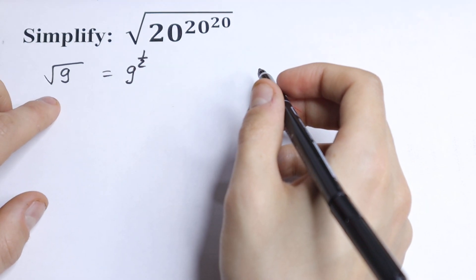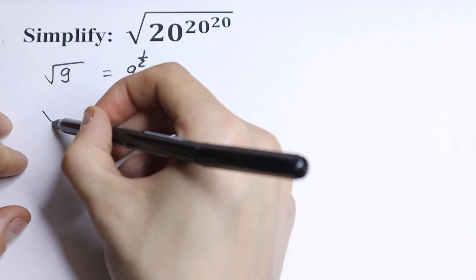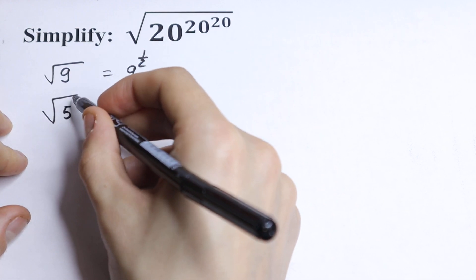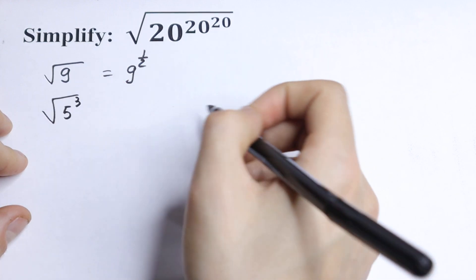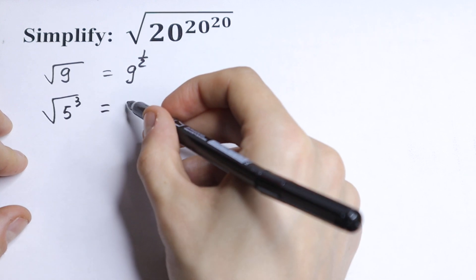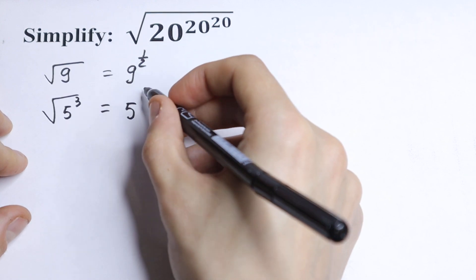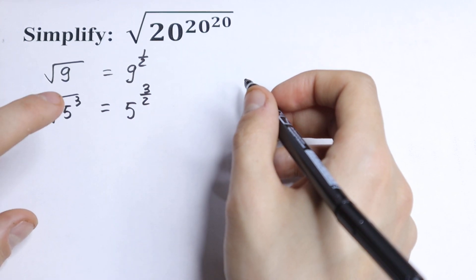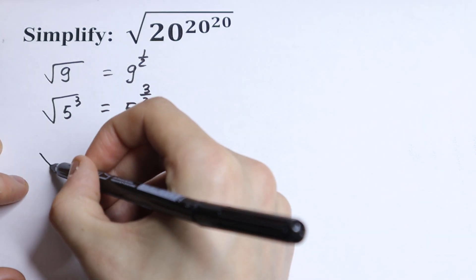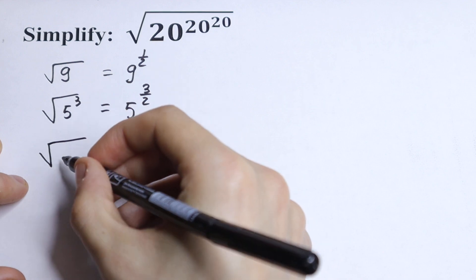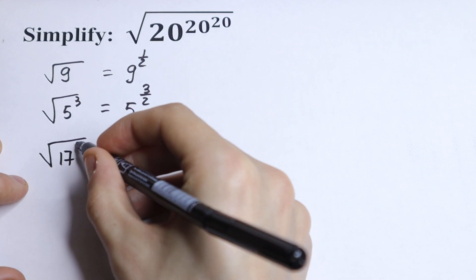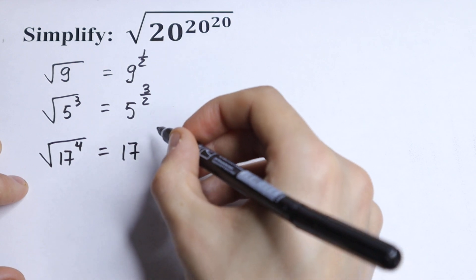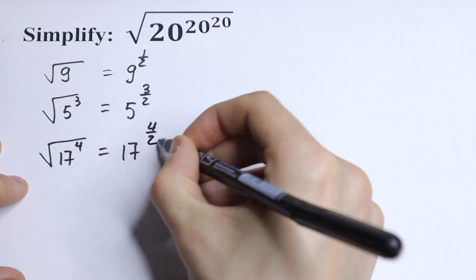I want to write it another way. For example, the square root of 5 cubed will be equal to 5 to the power 3 over 2. And similarly, the square root of 17 to the power 4 will be equal to 17 to the power 4 over 2.